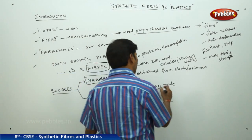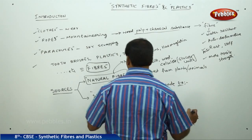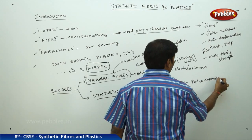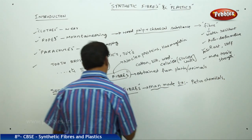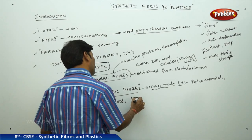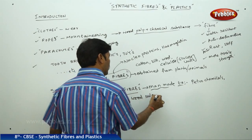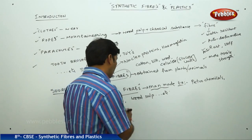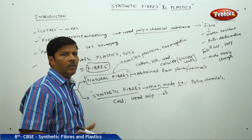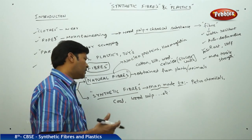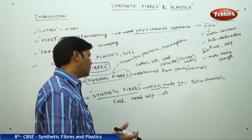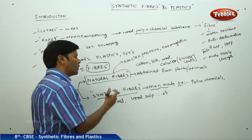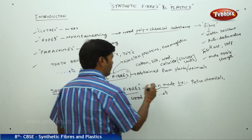When you go for synthetic fibers, these are man-made. The best sources of synthetic fibers are petrochemicals. Synthetic fibers can also be obtained from coal and wood pulp. All these are added with a suitable chemical substance, which immediately results in the formation of a new substance called synthetic fibers, which have certain advantages as well as certain disadvantages.